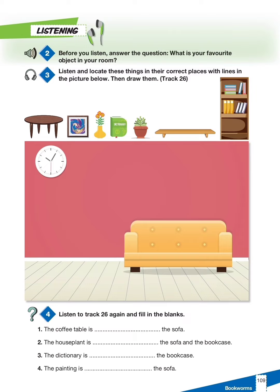There is a coffee table in the room. Draw the coffee table in front of the sofa. Draw the vase on the coffee table. Draw the house plant and the bookcase near the sofa. The house plant is between the sofa and the bookcase.